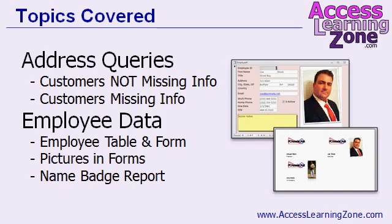We're going to start today by doing some more query work. We're going to begin by making some address queries. The first query will be to see which customers are not missing any address information — they have an address, city, state, and zip code. That way we can correct our mailing label report to only send mailings to customers where we have a complete address.